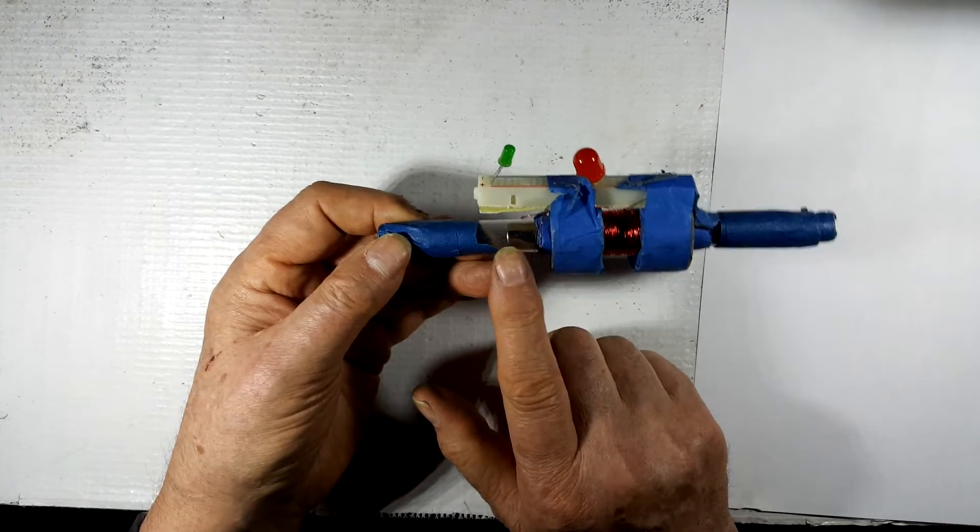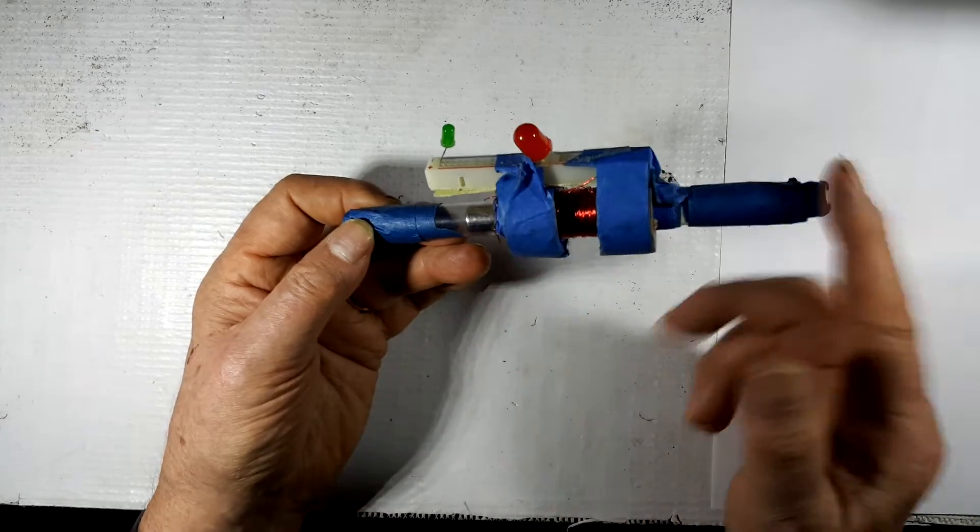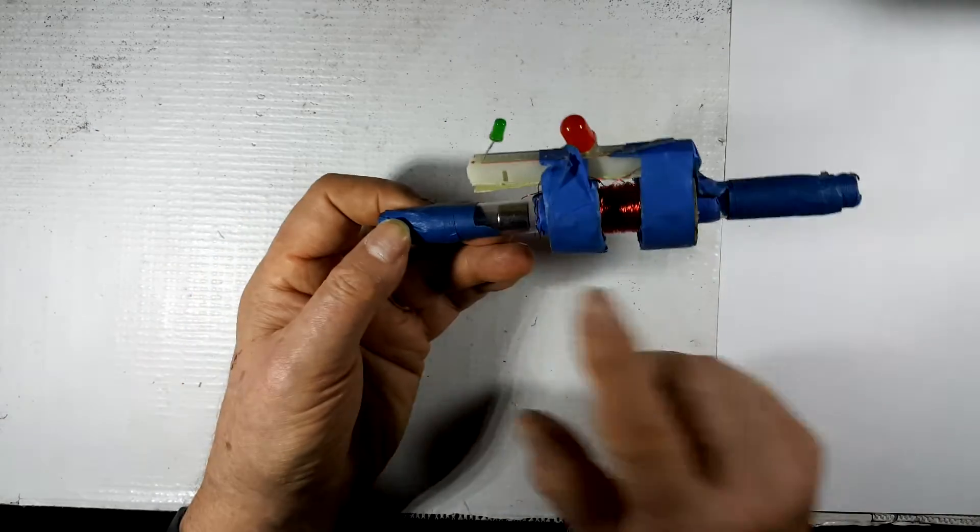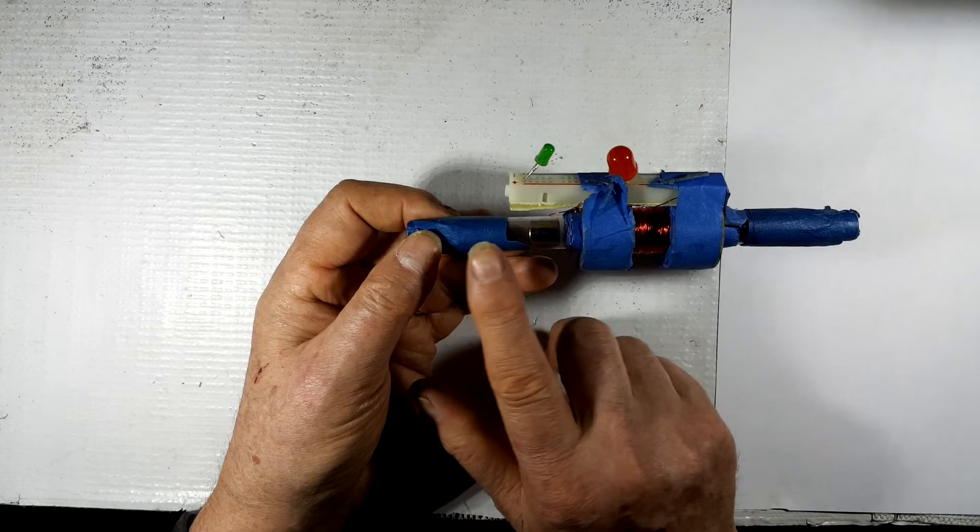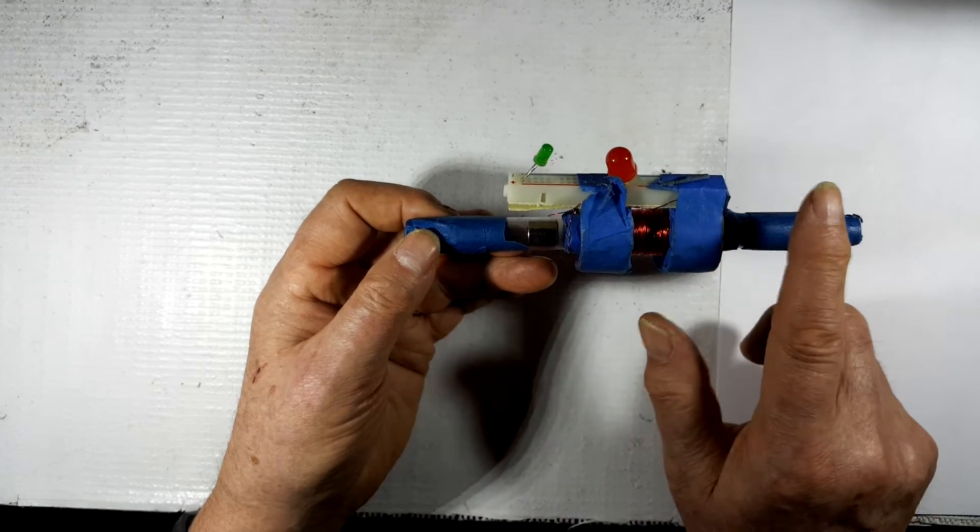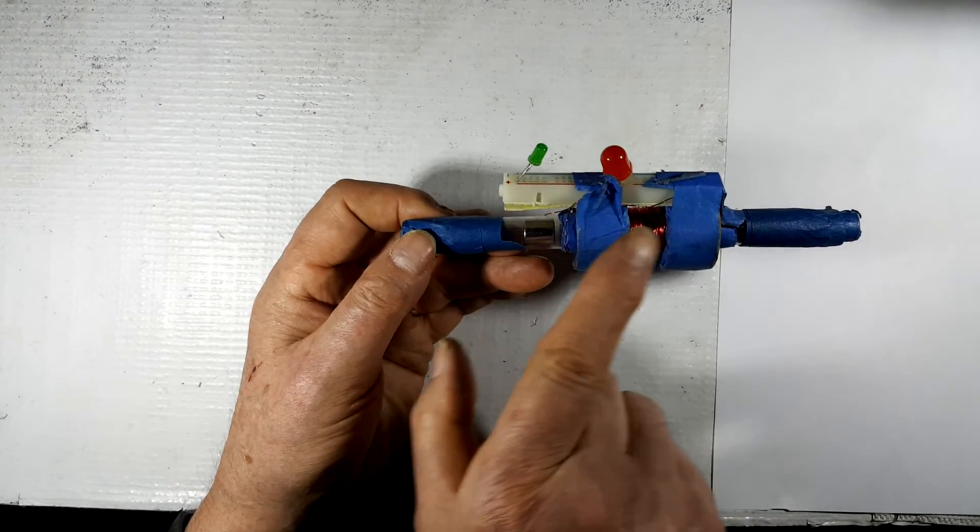So what's going to happen is I am going to shake this magnet, which will go back and forth through this conductor, and the magnetic field will induce a current. When it's going this direction it will light the red LED,